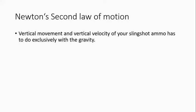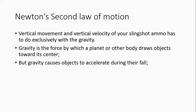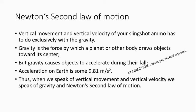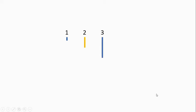Vertical movement and velocity of your slingshot ammo has to do exclusively with gravity — the force by which a planet draws objects toward its center, causing objects to accelerate during their fall. Acceleration on Earth is approximately 9.81 meters per second squared. In freefall: in the first second the total distance covered is 4.9 meters; in the second second, 14.9 meters; in the third, 29.4 meters; and in the fourth, 49.0 meters — totaling 98.2 meters. When we speak of vertical movement and velocity, we speak of gravity and Newton's second law of motion.